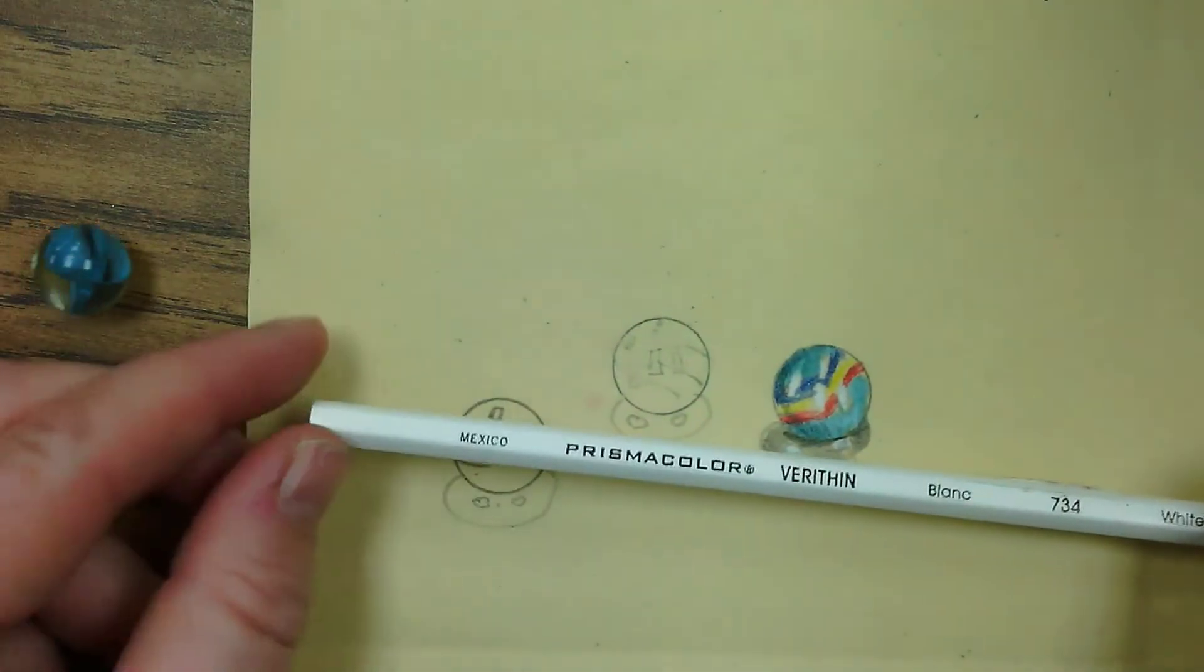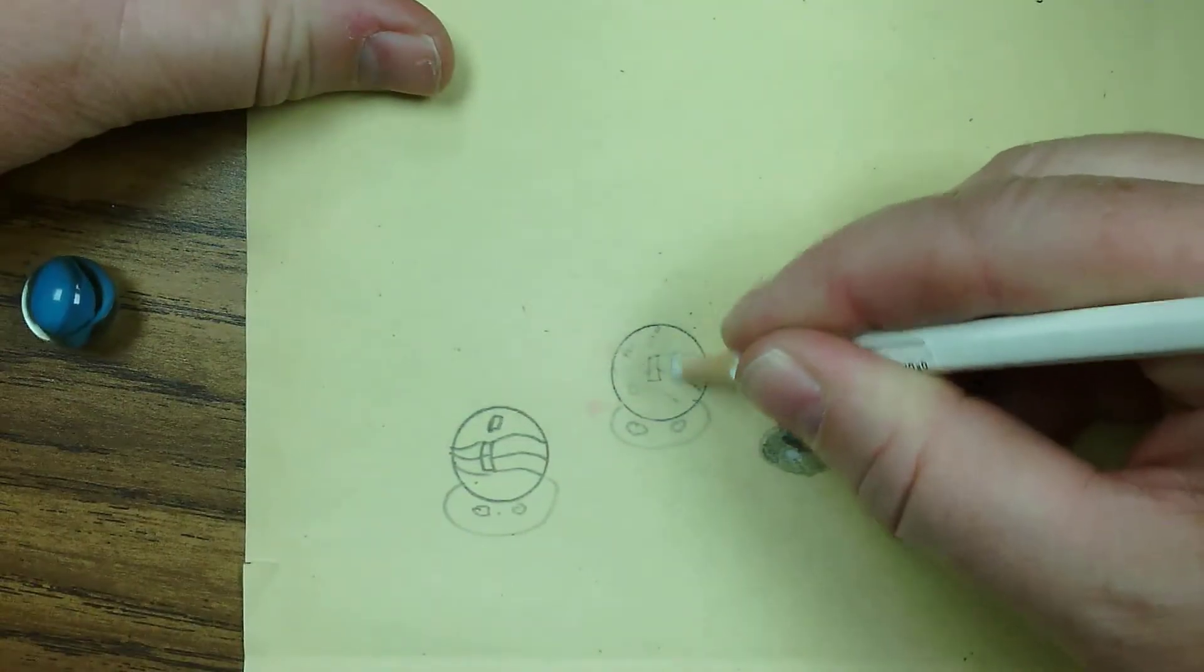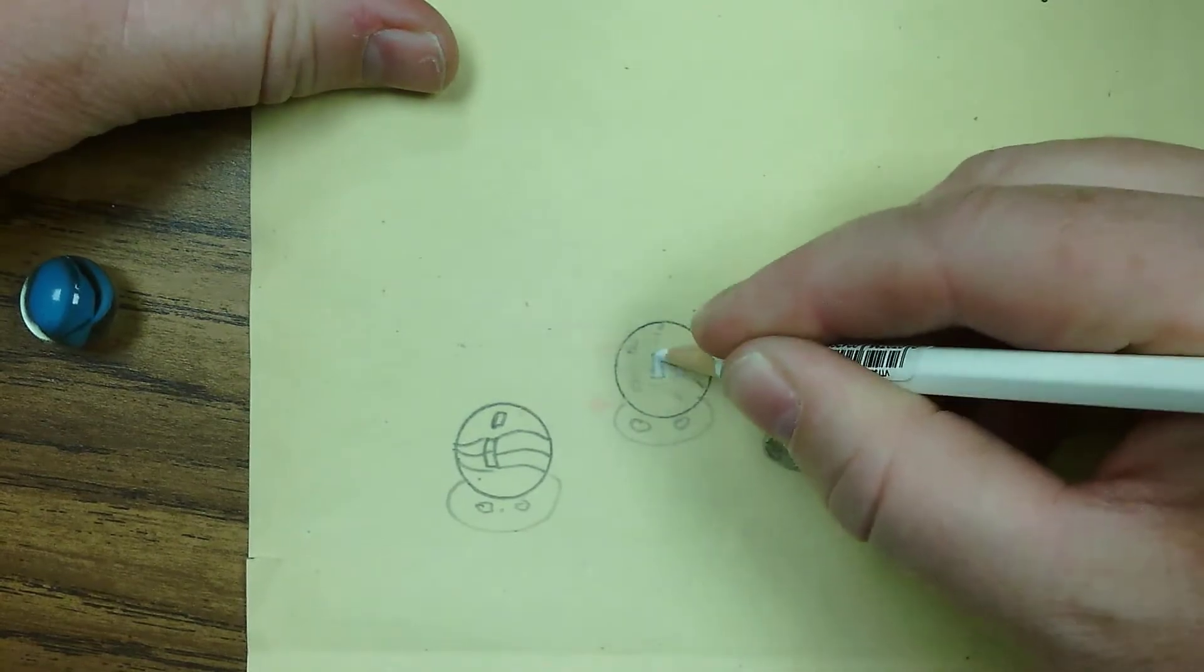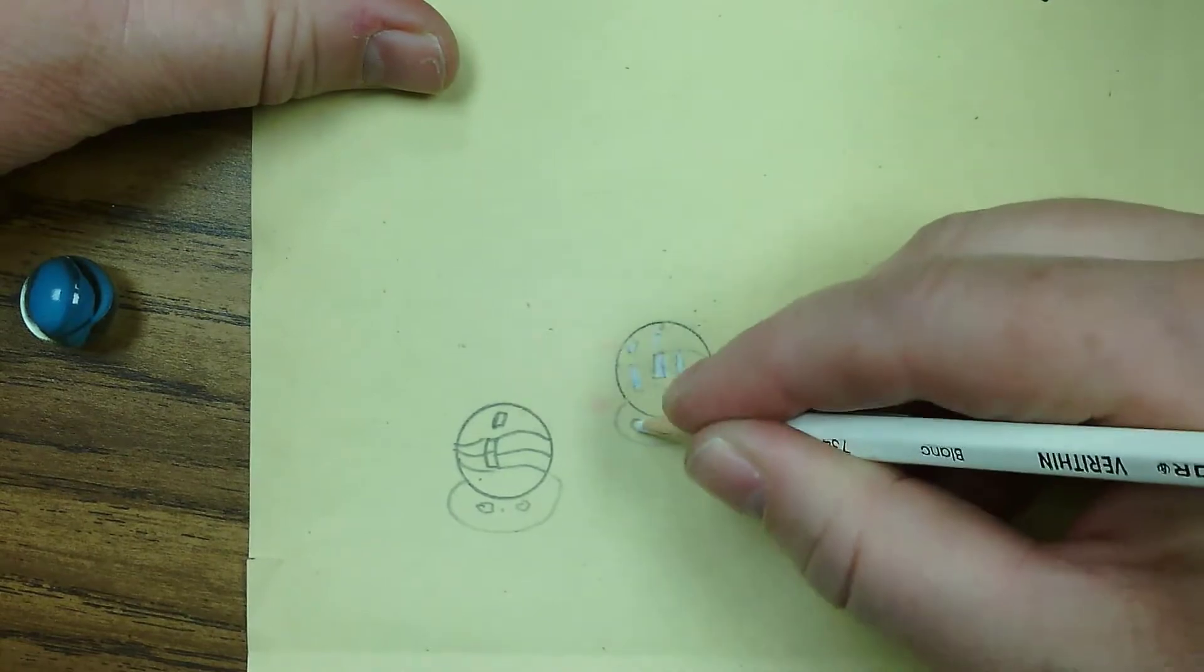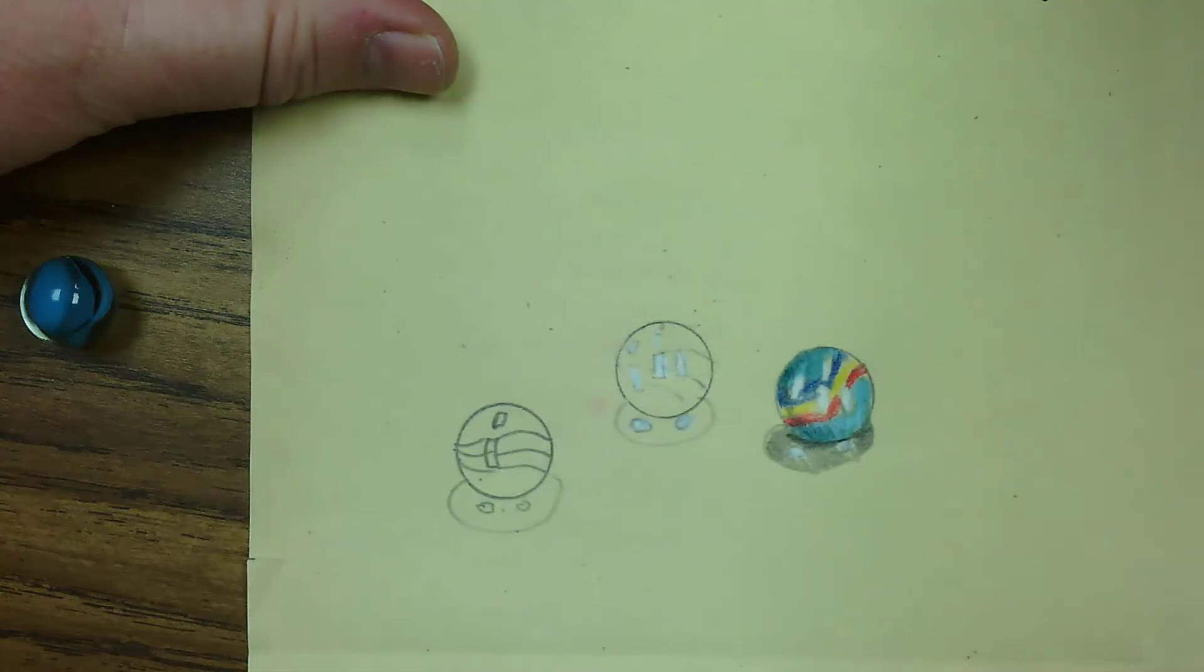The very first thing you're going to color in is white. Get that Prismacolor white or a good quality white colored pencil and color in all the highlights, pressing down hard with your pencil. Use firm pressure to build up a nice bright white, and don't forget the highlights that are in the shadow.